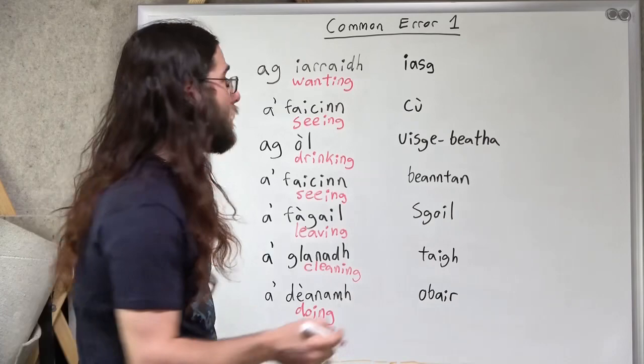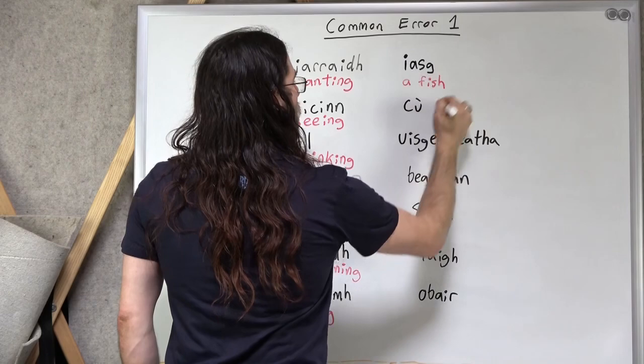Okay, so we've got our actions. Let's sort out our things. We've got iasg is a fish.